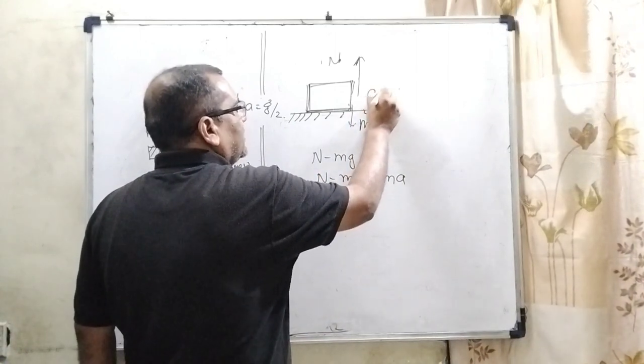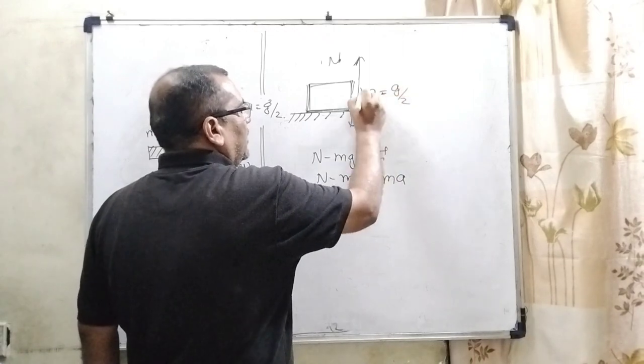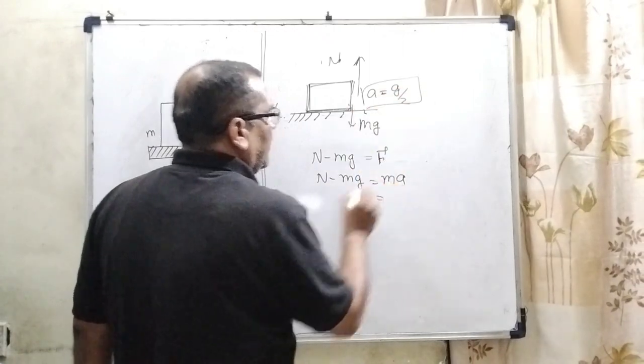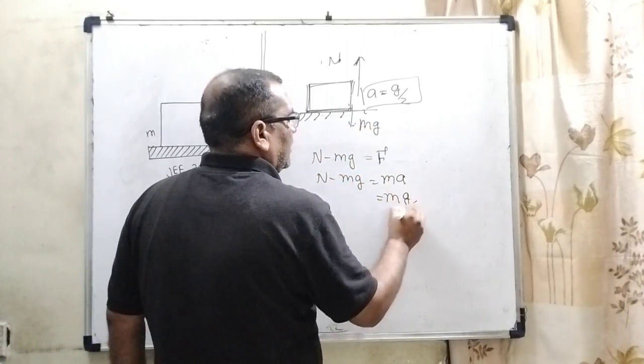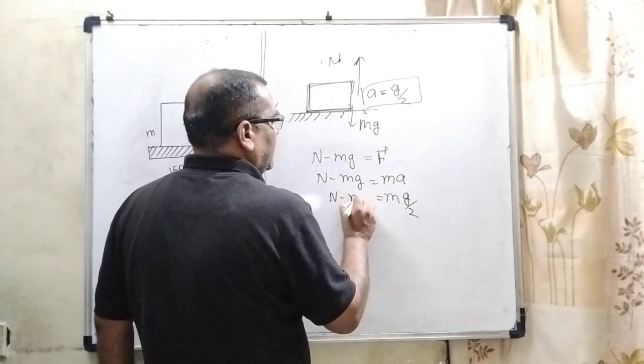But here, given that acceleration equals g/2, it is given in the question. So we substitute this value of g/2 in place of a. N - mg equals m(g/2).